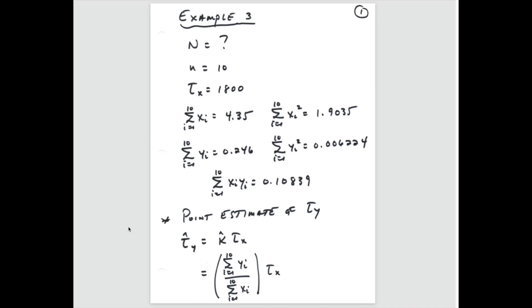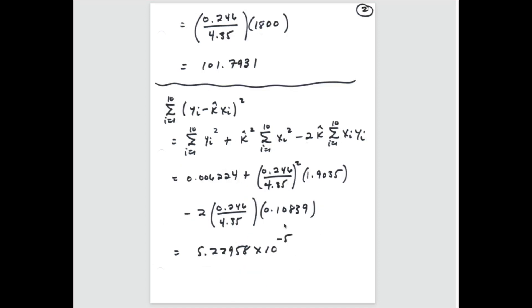We can now calculate the point estimate of τ_y. τ̂_y equals k̂ times τ_x. Recall that k̂ is the ratio of the sample sums: sum of y's divided by sum of x's, so 0.246 divided by 4.35, multiplied by the known τ_x of 1800 pounds. This gives us a point estimate for the total sugar content in the entire shipment of 101.7931 pounds.